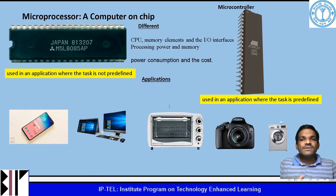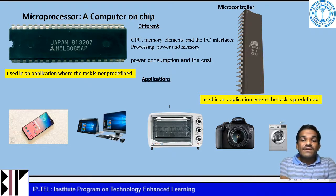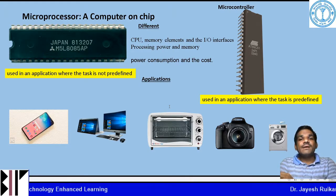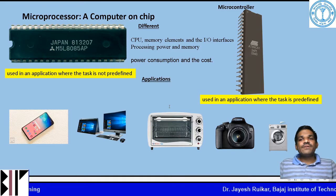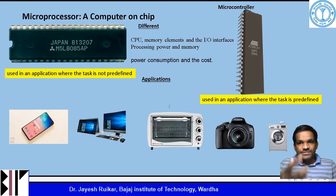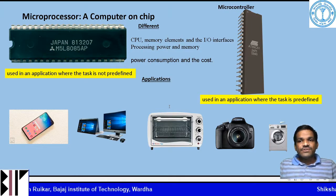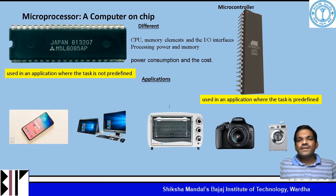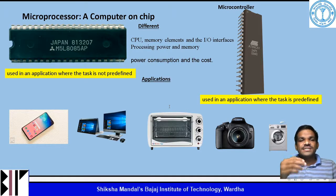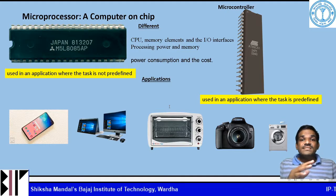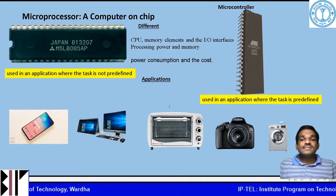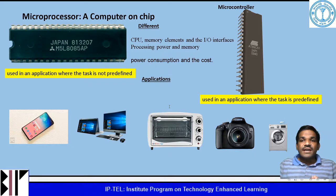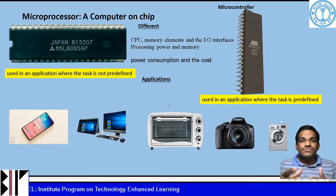Microcontroller and microprocessor are also different in terms of processing power and power consumption. When we talk about applications, the classic application of a microprocessor is a personal computer or laptop. Using a laptop you can do a lot of things like gaming, web browsing, photo editing, creating documents, mathematical calculations, or simulation. The microprocessor is basically used in applications where the task is not predefined — the task depends upon the user.